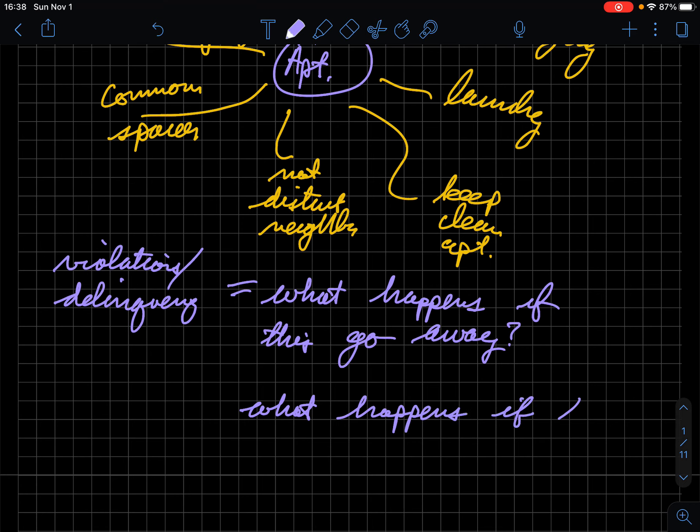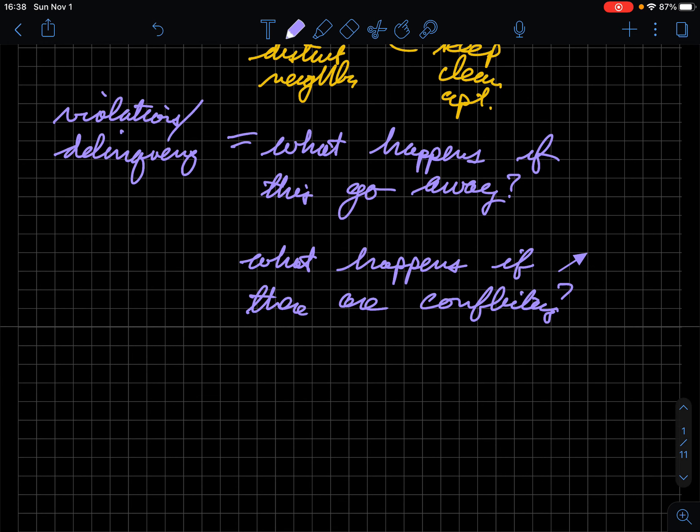If there are conflicting views about what should happen or what is or is not expected, what happens?